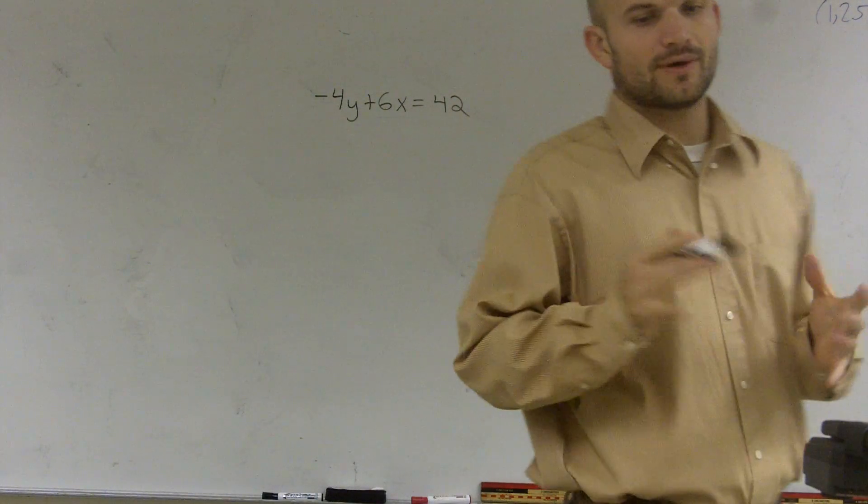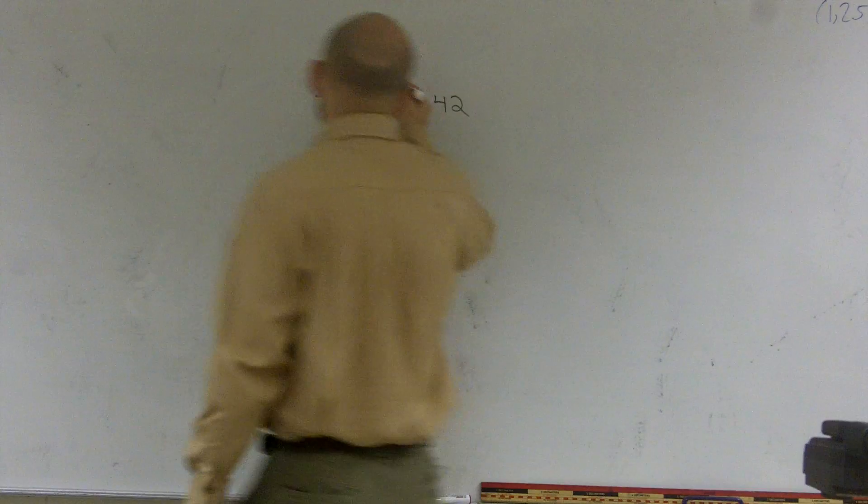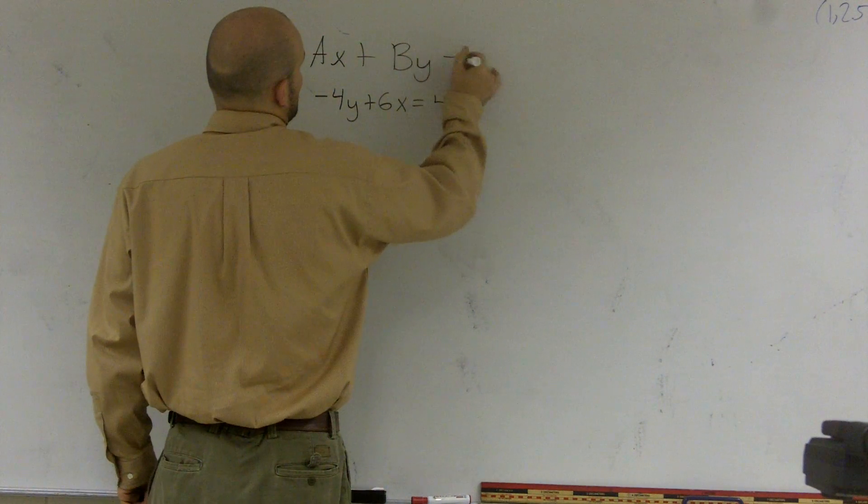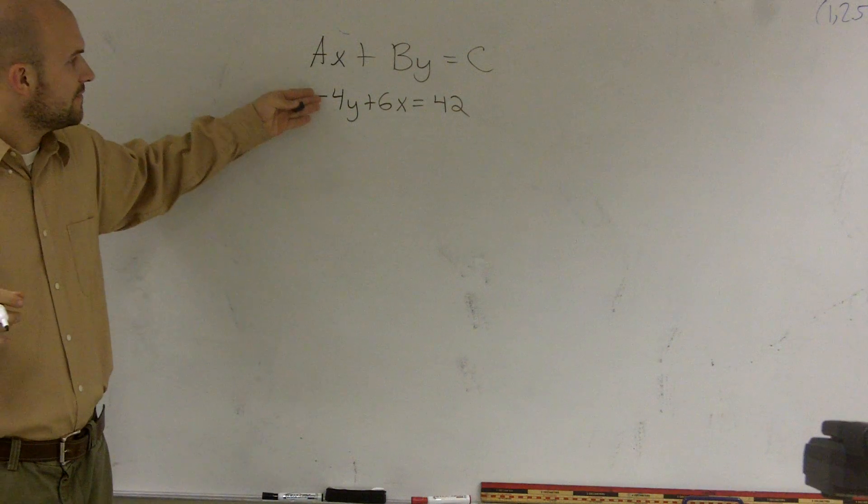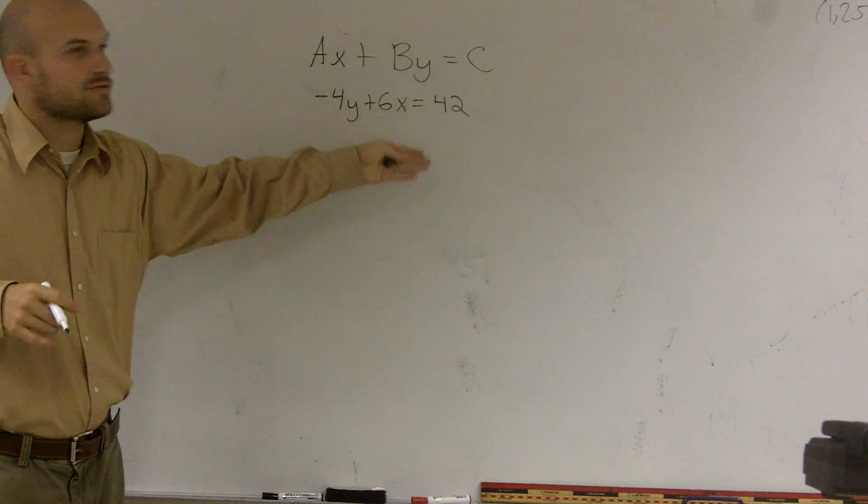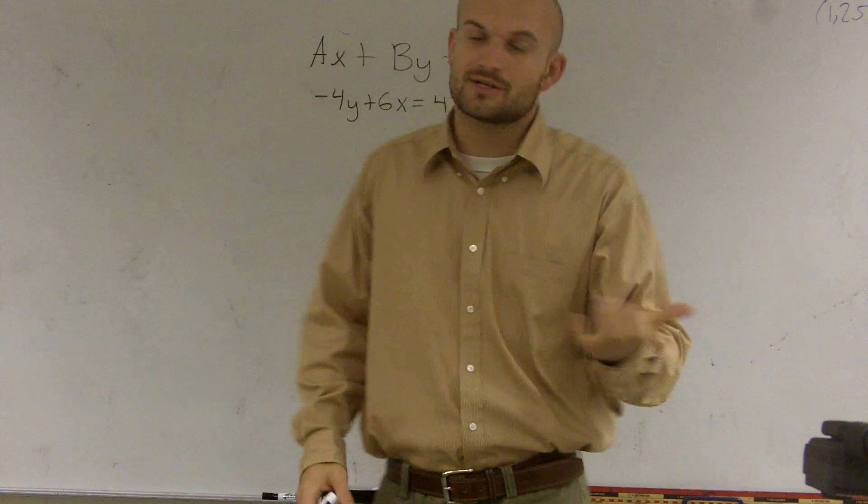So when we're talking about standard form, one thing we want to make sure we remember is what exactly is standard form. Standard form is ax plus by equals c, where a represents the coefficient of our x, b represents the coefficient of our y, and c represents our constant, not a variable but just our constant.